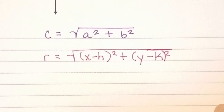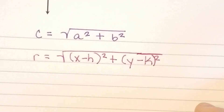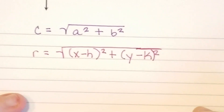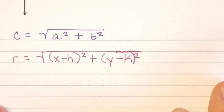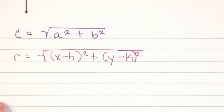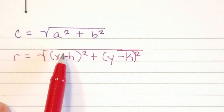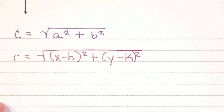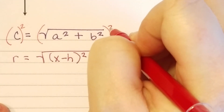Let's do this a couple of times here, just so you can see the connections between the Pythagorean theorem and the standard equation of a circle. So if I wanted to rearrange this so that it was in the form we're used to seeing, we would square both sides and rearrange it.